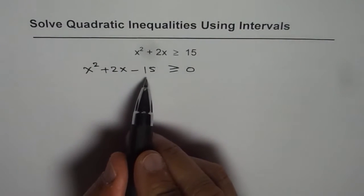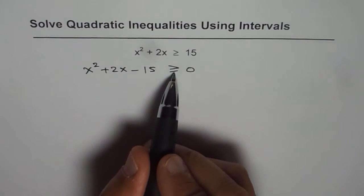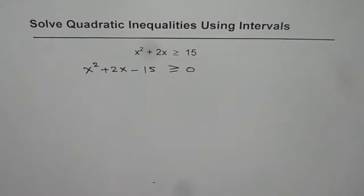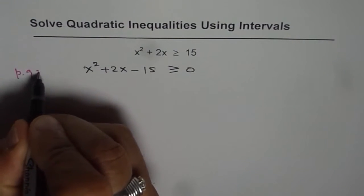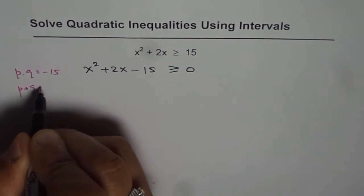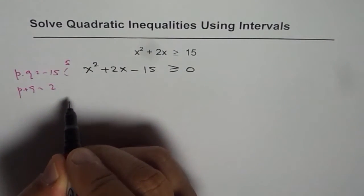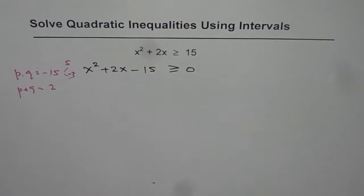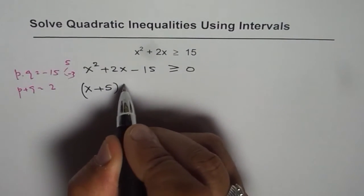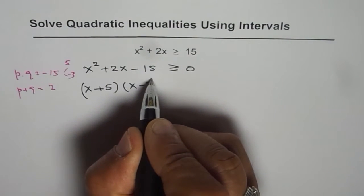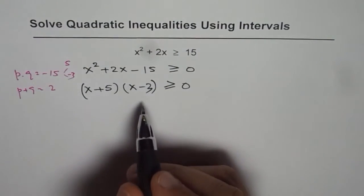Now we need to factor this. Once you factor, you know easily what values can make this expression 0. To factor, we are looking for two numbers whose product is minus 15 — that means p times q equals minus 15 — and whose sum is plus 2. The numbers are 5 and negative 3. So we get the factored form: x plus 5 times x minus 3, greater than or equal to 0.